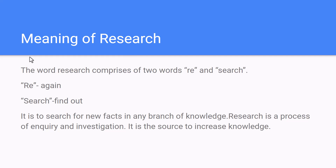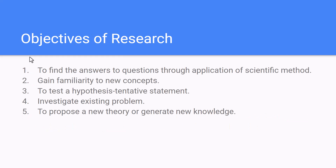The basic objectives of research are: first, to find answers to questions through the application of scientific methods; second, to gain familiarity with new concepts; third, to test a hypothesis, which is a tentative statement; fourth, to investigate an existing problem; and fifth, to propose a new theory or generate new knowledge. These are the objectives of research.